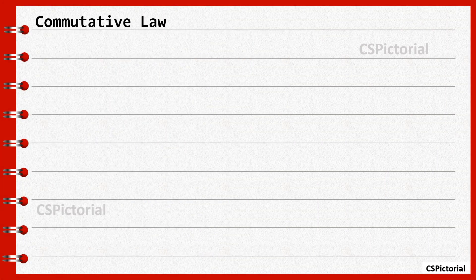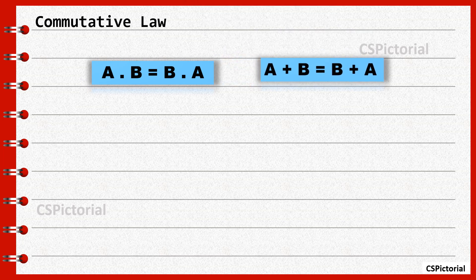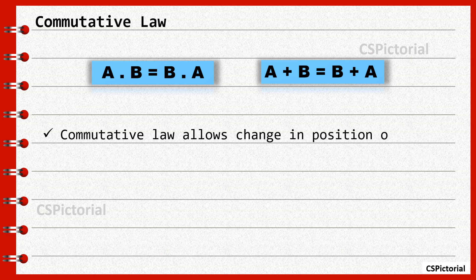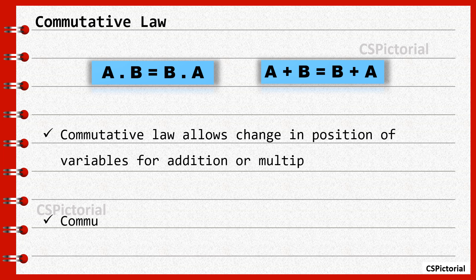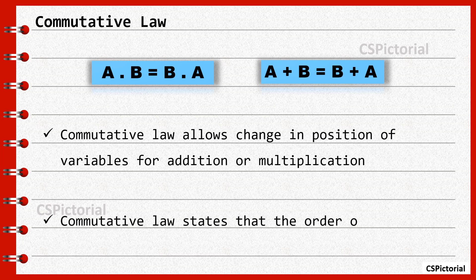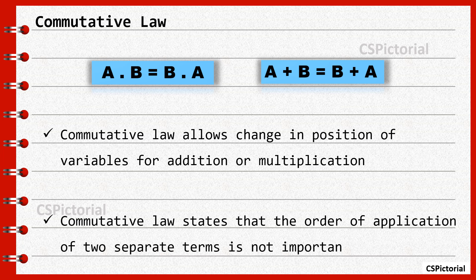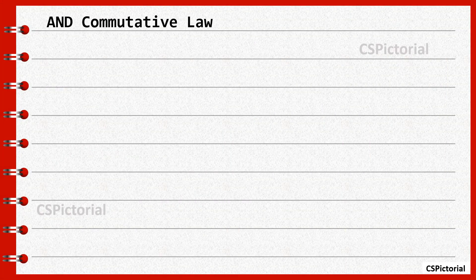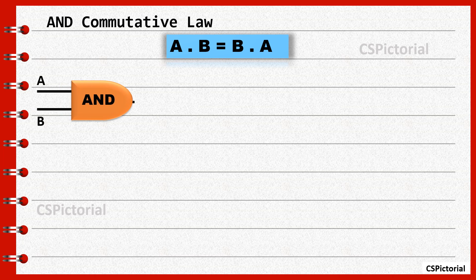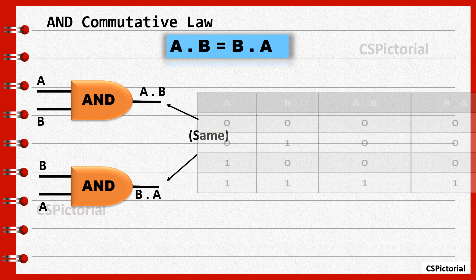Commutative law. A dot B equals B dot A and A plus B equals B plus A. This law is similar to mathematical algebra. Commutative law allows changes in position of variables; that is, A dot B is similar to B dot A, and A plus B is similar to B plus A. The AND gate output for inputs A dot B is similar to the AND gate output for inputs B dot A.